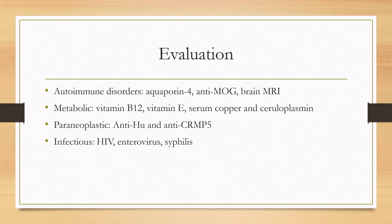You can also look for anti-Hu and anti-CRMP5, which are typically associated with small cell lung cancers. Additionally, infections can cause a similar picture, and you can look for HIV, enterovirus, or syphilis.